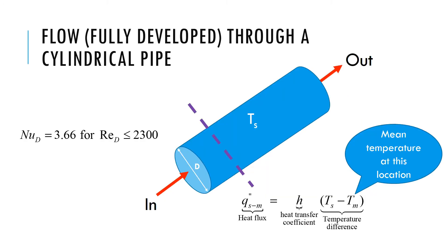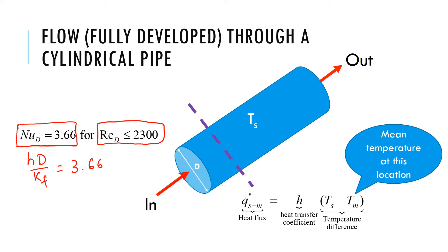In cylindrical geometry, a very common example is flow through a pipe. The equation is simple: NuD = H·D over K_fluid equals 3.66, as long as the Reynolds number is less than 2300. The application is a little complex — consider cold fluid flowing through a pipe and getting heated as it passes through different sections.